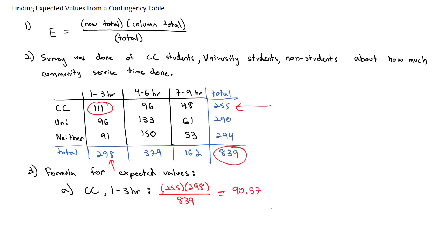If these variables are truly independent, I would expect 90.57 students to fall in that category. We had 111. And then we would do this for every single spot. If I wanted to look at the community college students who did four to six hours of community service, I'll look at the four-to-six-hour community college students and notice what row and column that student is in, and that's going to be row 255, column total 379, divided by the overall total of 839. And we would find out that we would expect there to be 115.19 community college students doing four to six hours of community service. And we would continue to do this all the way through.